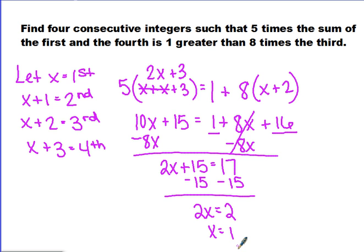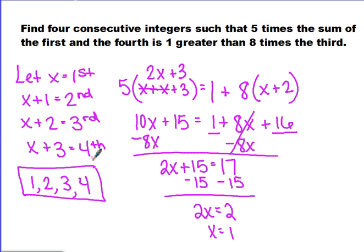If x equals 1, then the second integer is 1 plus 1, which is 2. The third is 1 plus 2, which is 3. And the fourth is 1 plus 3, which is 4. So the four consecutive integers are 1, 2, 3, and 4. Make sure that when solving these problems your let statements reflect your answers and that your answers are reasonable and make sense.